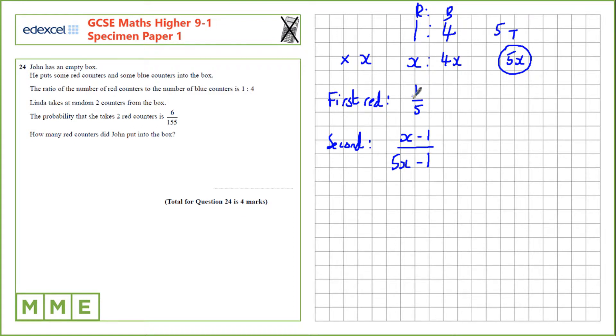Now to calculate the overall probability of both of these reds being taken, we multiply this by this to get this answer here. So, 1 over 5x times x minus 1 over 5x minus 1 is 6 over 155.